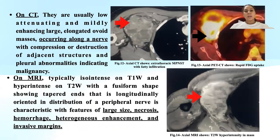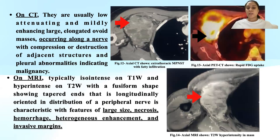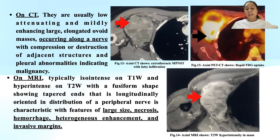On CT, these tumors are usually low-attenuating and mildly enhancing — large, elongated, or ovoid masses occurring along a nerve with compression or destruction of adjacent structures. Pleural abnormalities indicate malignancy. On MRI, similar lesions are isointense on T1-weighted images, hyperintense on T2, with a fusiform shape showing tapered ends longitudinally oriented in the distribution of the peripheral nerve. Characteristic features of MPNSTs include large size, necrosis, hemorrhage, heterogeneous enhancement, and invasive margins.